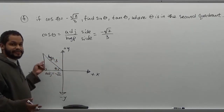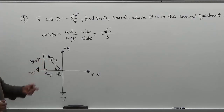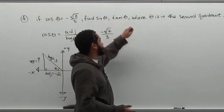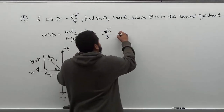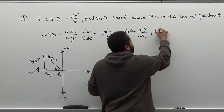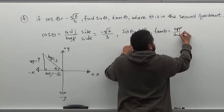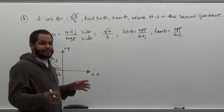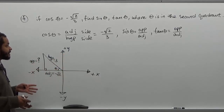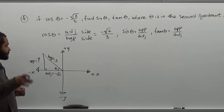What we don't know in this triangle is the opposite side, so we'll leave a question mark for it. We know from the Pythagorean theorem we can find the opposite to then get sine and tangent. The opposite side must be positive because the y value is positive in the second quadrant — only the adjacent side is negative. Sine is positive in the second quadrant, while tangent is negative.